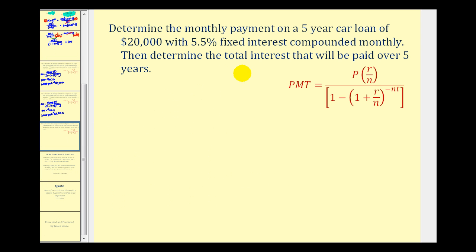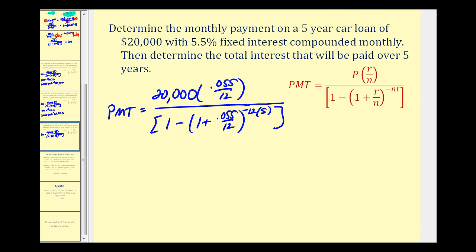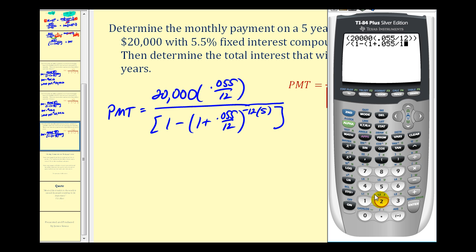Let's look at one more example with a car loan. Determine the monthly payment of a five-year car loan of $20,000 with a 5.5% fixed interest compounded monthly. Using the same formula, our numerator is $20,000 times 0.055 divided by 12. Our denominator is one minus the quantity one plus 0.055 divided by 12, raised to the negative NT power. N is 12 and T is 5, so our exponent is negative 60.